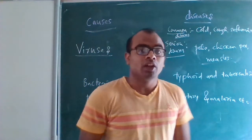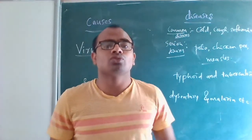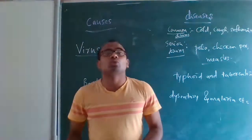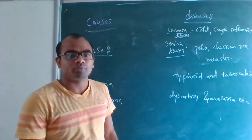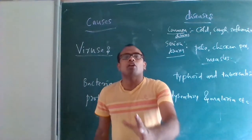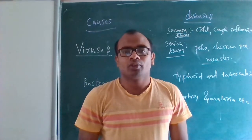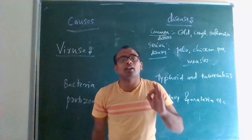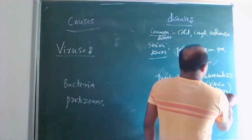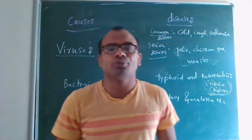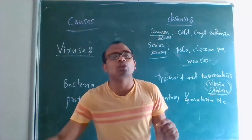Bacteria cause typhoid and tuberculosis. Cholera is caused by a bacteria called Vibrio cholerae. Bacteria is responsible for typhoid, tuberculosis, and cholera — that is Vibrio cholerae.